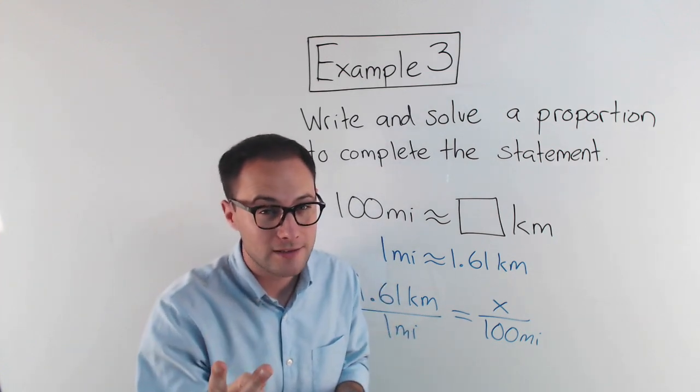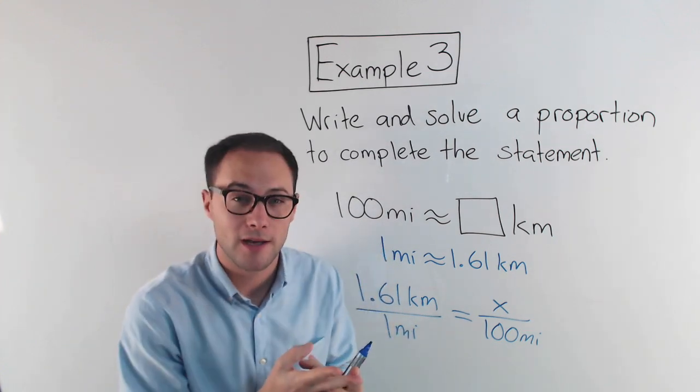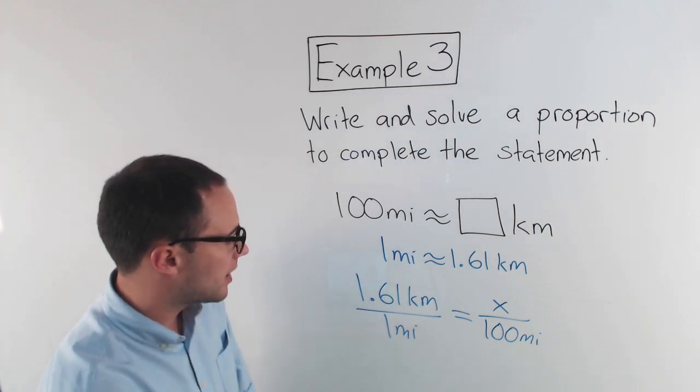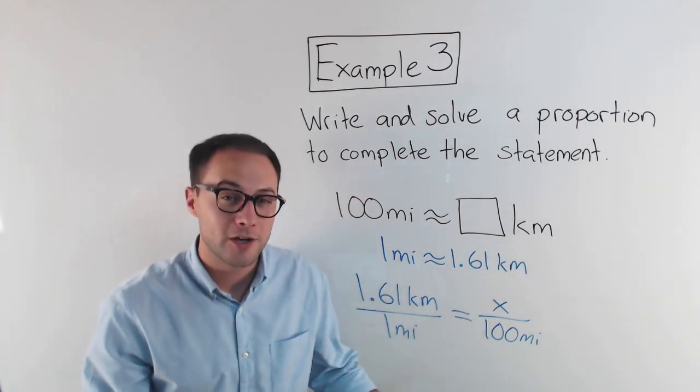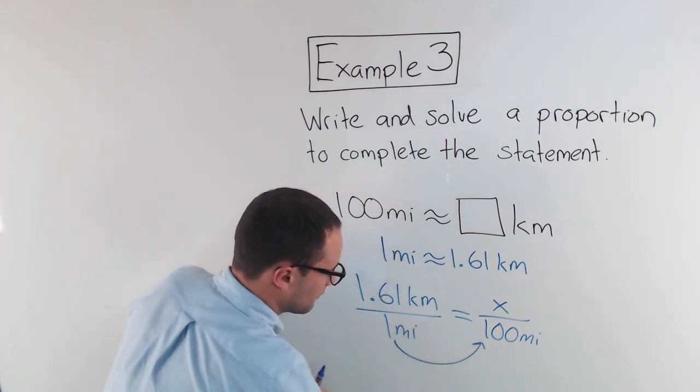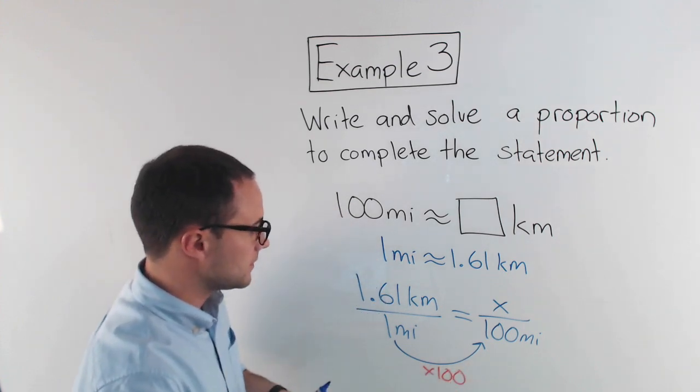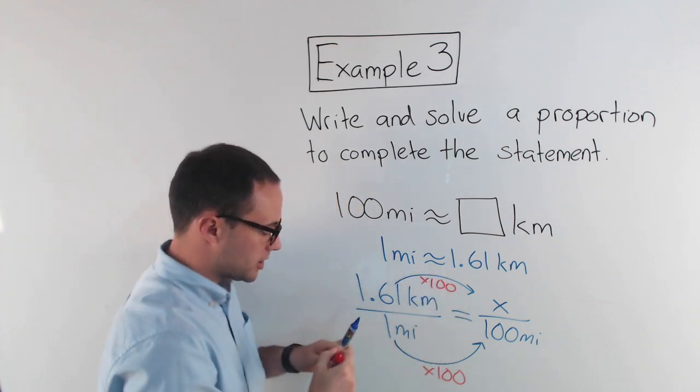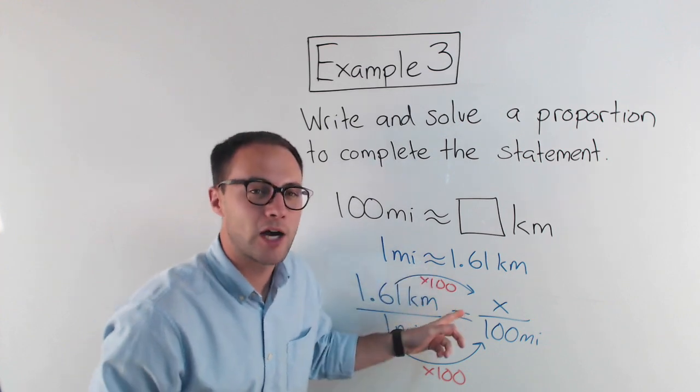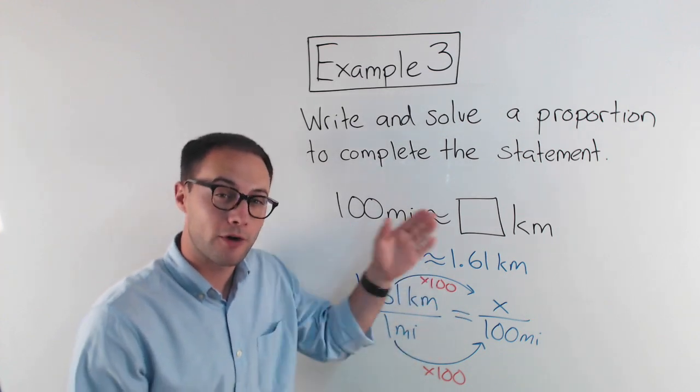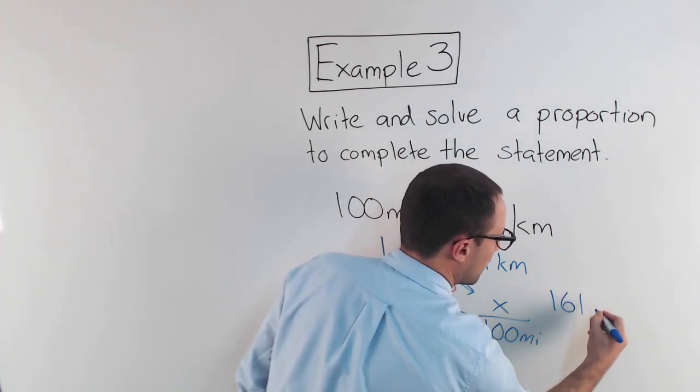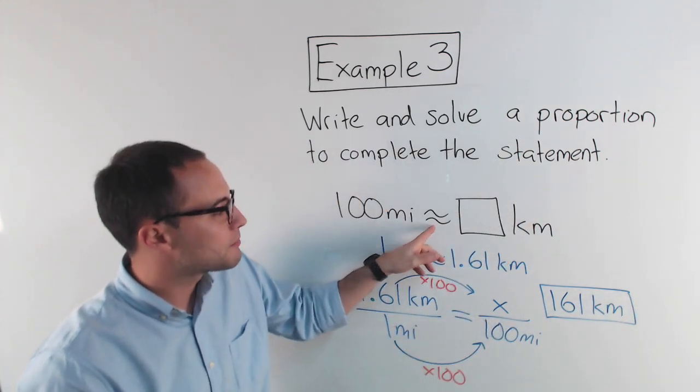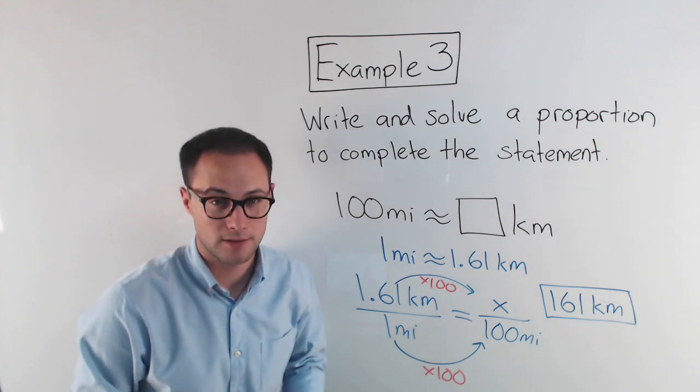And again, we just learned two ways, right? Mental math and cross products. Always try to do mental math first. If it works, great. If not, then you can go to cross products. So if I look here, I'm trying to get to x, well, from 1 mile to 100 miles. That's real simple. Just multiply by 100. So I do the same thing here. To get to x, I'm just going to multiply by 100. So 1.61 kilometers times 100. That's very simple. Just move the decimal point two times to the right. So my answer is 161 kilometers. X is 161 kilometers. So 100 miles is approximately 161 kilometers. Here's some more to try on your own.